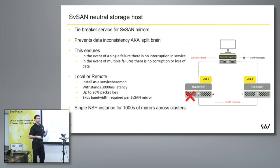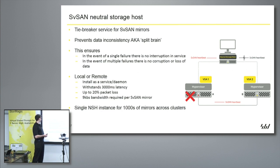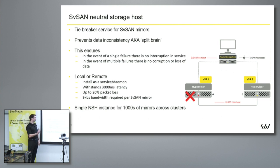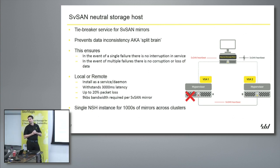The neutral storage host is our witness device. The VSA is mirroring, but we want to prevent a split brain. In best practices we have this neutral storage host, and what really breaks us apart from others in the space is where this can live, due to the tolerance of connectivity between it and its clusters. A neutral storage host can sustain 3,000 milliseconds latency on the WAN link, 20% packet loss, and a mirror itself only requires 9 kilobits. For a customer with 2,200 locations on T1 connections, getting up to three seconds of latency would mean you have other problems.